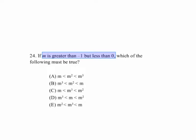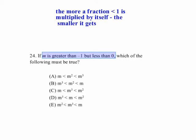Well, remember that when you have a fraction less than 1, as you multiply it by itself, it actually gets smaller. For instance, 1 half squared is 1 fourth. 1 half is greater than 1 fourth.